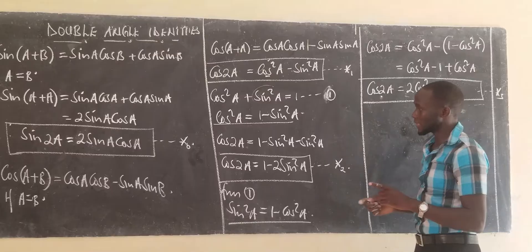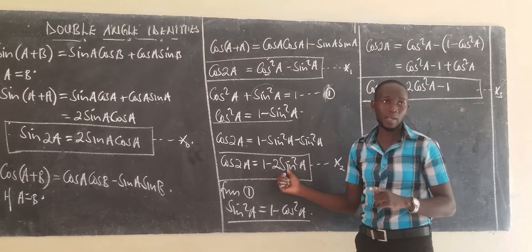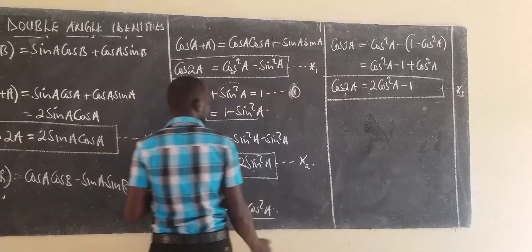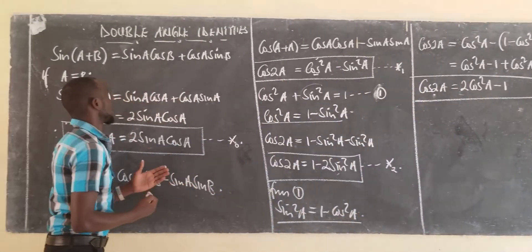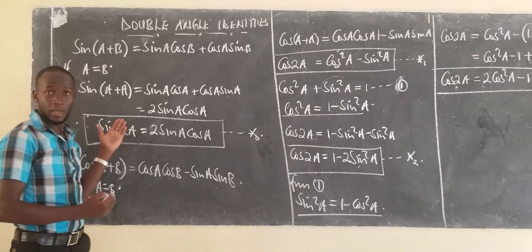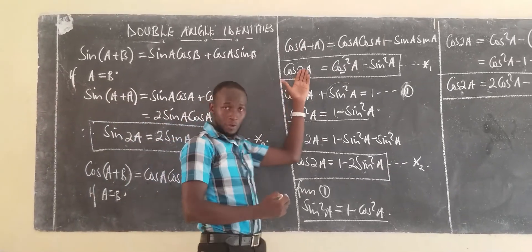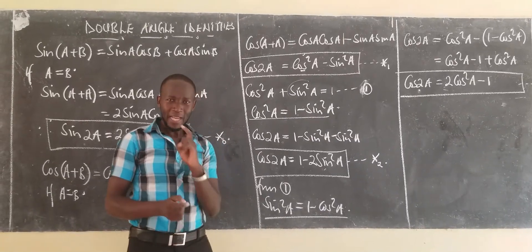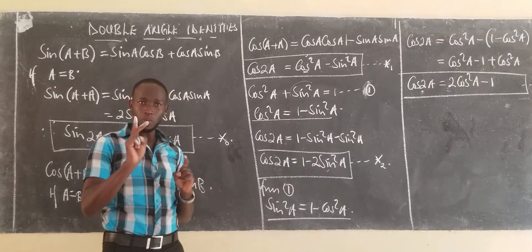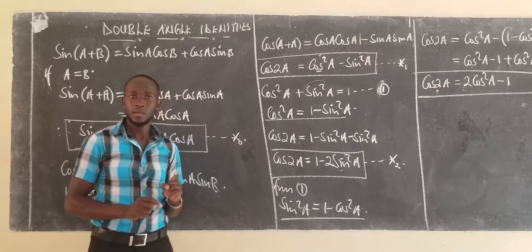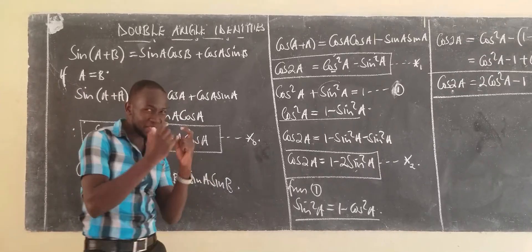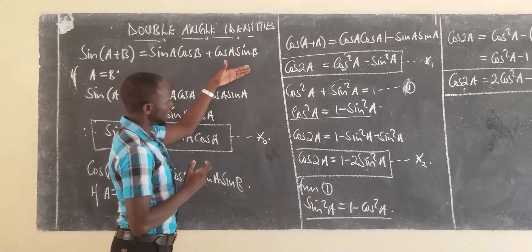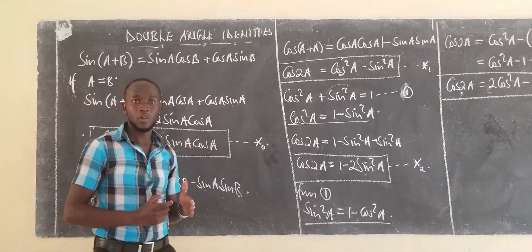Cos of 2A is a special expression because it has more than two forms. It can be expressed in terms of sine as well as in terms of cosine. The three forms are: cos squared A minus sin squared A; 1 minus 2 sin squared A; and 2 cos squared A minus 1.